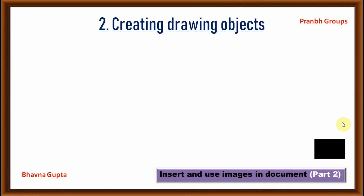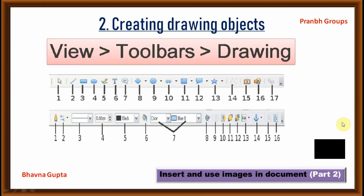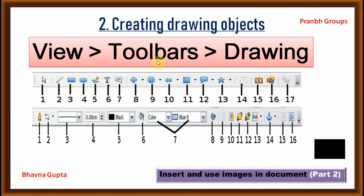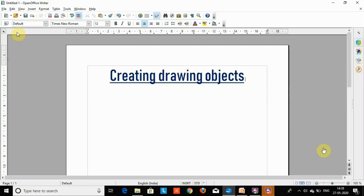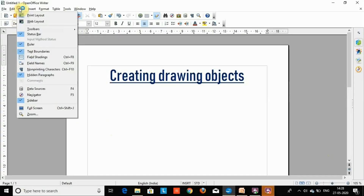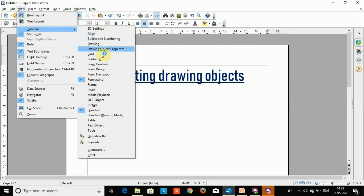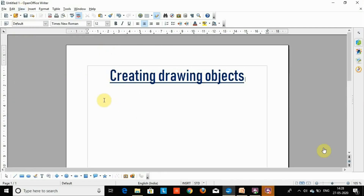Next topic: creating a drawing object. Follow these steps. Go to View, then Toolbar, then Drawing. There are two toolbars: the drawing toolbar and the drawing properties toolbar. Let's do the practical. First, click the View menu, then Toolbar, then select Drawing. The drawing toolbar appears.